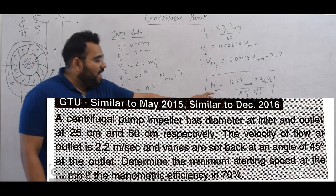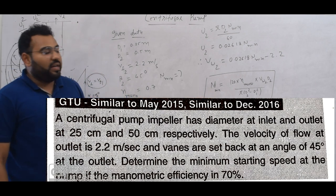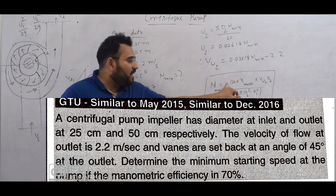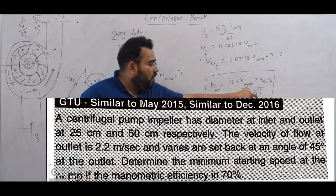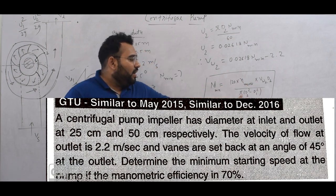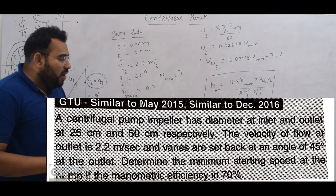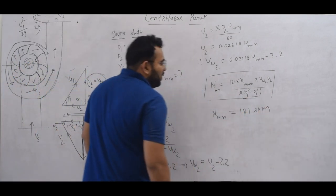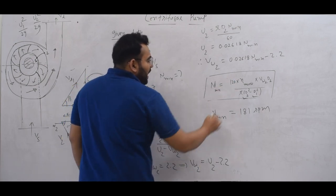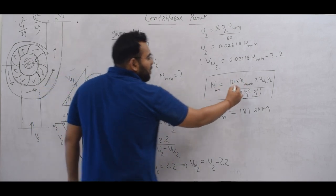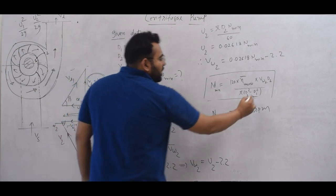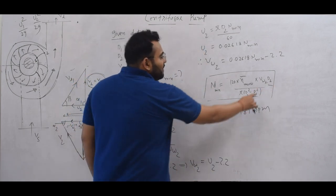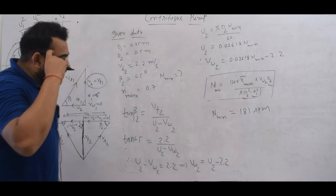First of all, we have this equation. Minimum starting speed equation is 120 into N mano VW2 D2 upon pi D2 square minus D1 square. The only thing missing in this equation is VW2. We don't have VW2.